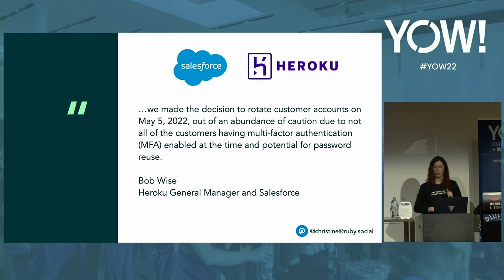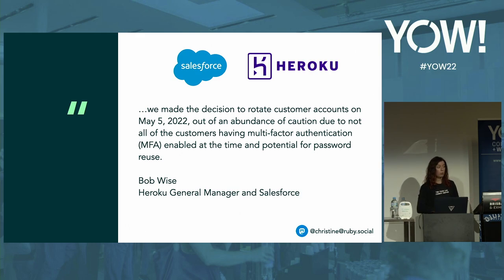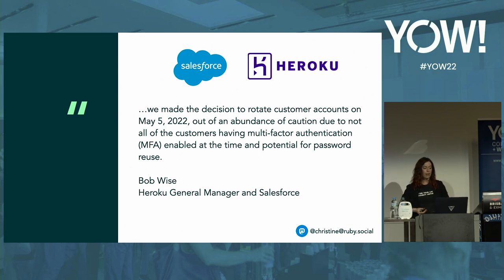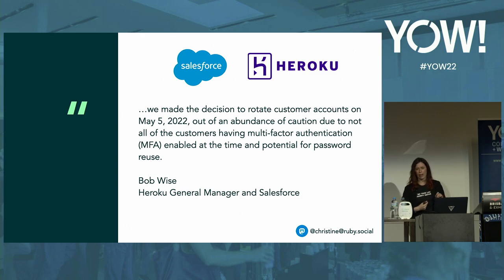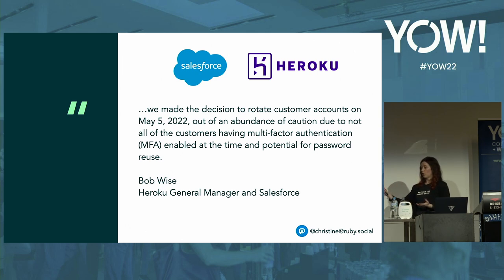A real-world example: Heroku, owned by Salesforce, discovered in May 2022 that their database had been compromised — a user database with passwords, salts, and OAuth tokens. They required all users to reset passwords because they knew users probably didn't have additional authentication protecting them. This led to a terrible user experience: all those app integrations had to reset, plus awful communication. Another way to lose user confidence.